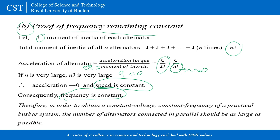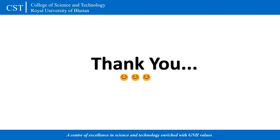From these two proofs, we can draw the conclusion that to obtain constant voltage and constant frequency, the number of alternators should be as large as possible — ideally approaching infinity.